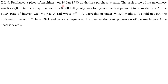X Limited purchased a piece of machinery on 1st January 1980 on the hire purchase system. The cash price of the machinery was 29,800. Terms of payment were 8,000 half-yearly over 2 years, the first payment to be made on 30th June 1980. The rate of interest was 6% per annum. X Limited wrote off 10% depreciation under written down value method. It could not pay the installment due on 30th June 1981, and as a consequence, the hire vendor took possession of the machinery.